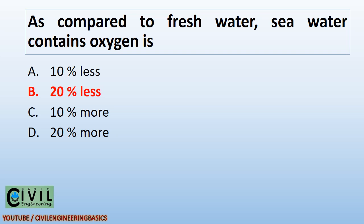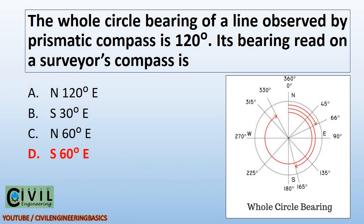The whole circle bearing of a line observed by prismatic compass is 120 degrees. Its bearing read on a surveyor's compass is South 60 degrees East. Whole circle bearing is measured from 0 to 360 degrees, whereas in a surveyor's compass bearing is measured by quadrant.